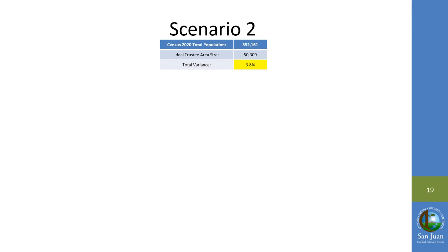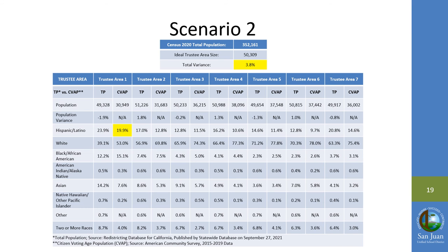The demographic breakdown for Scenario 2 is shown here. The variance for Scenario 2 is reduced to 3.8 percent. The largest concentration of a protected class is in Area 1 with 19.9 percent Hispanic Latino voters based on citizen voting age population, which is the same as Scenario 1.